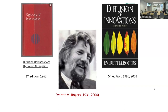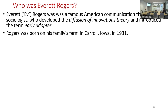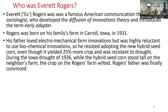Everett Rogers, who died in 2004, was a famous American communication theorist and sociologist who developed the theory of diffusion of innovations and introduced the term 'early adopter.' He was born in Carroll, Iowa in 1931. His father was a farmer who loved electromechanical farm innovations but was very resistant to biochemical innovations.